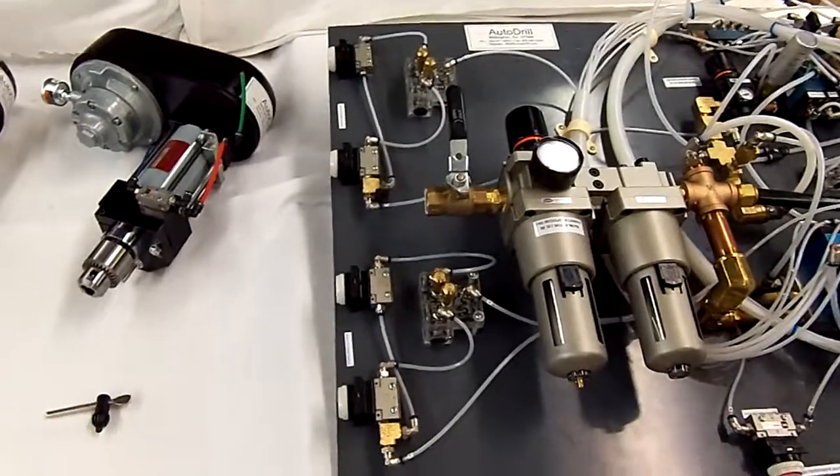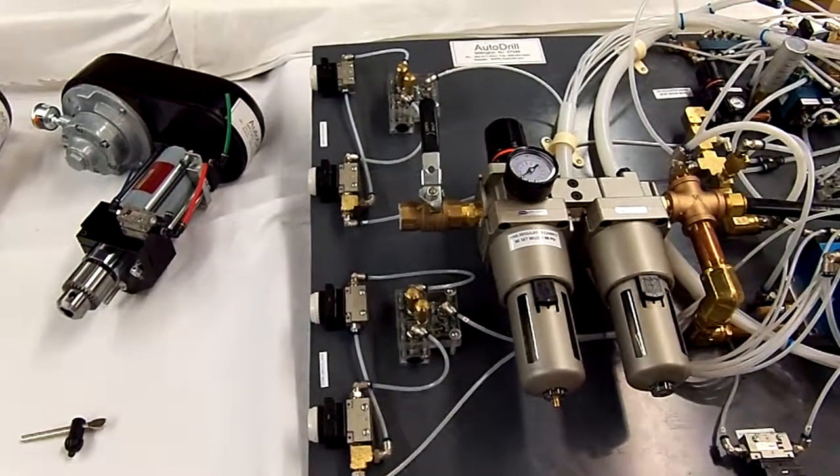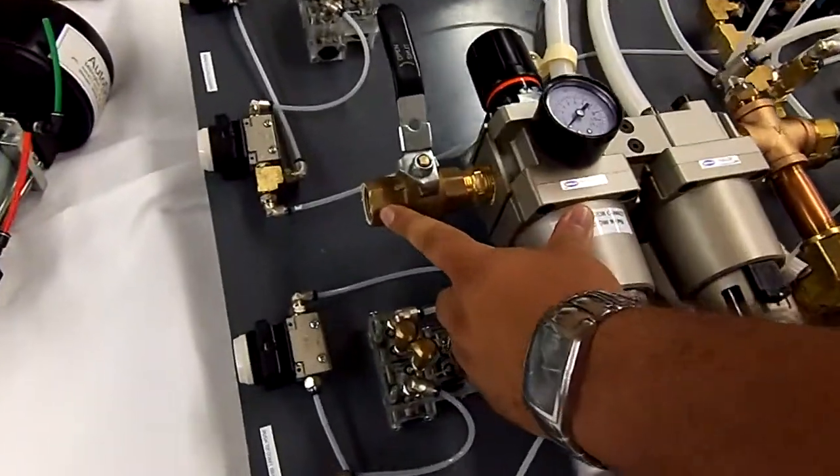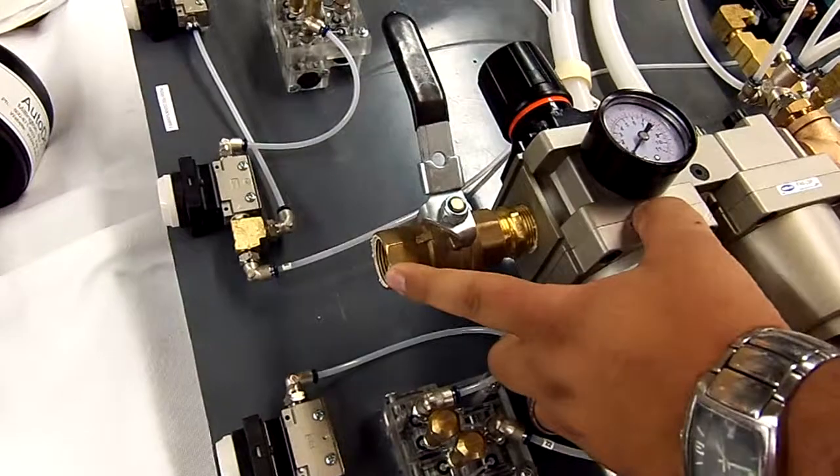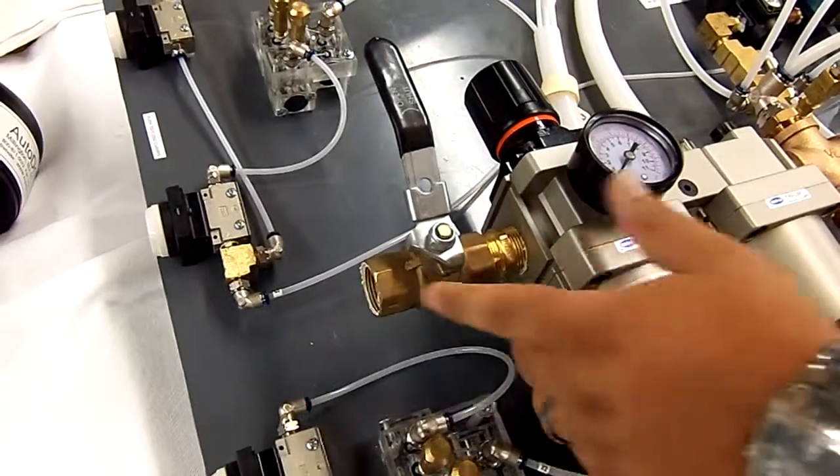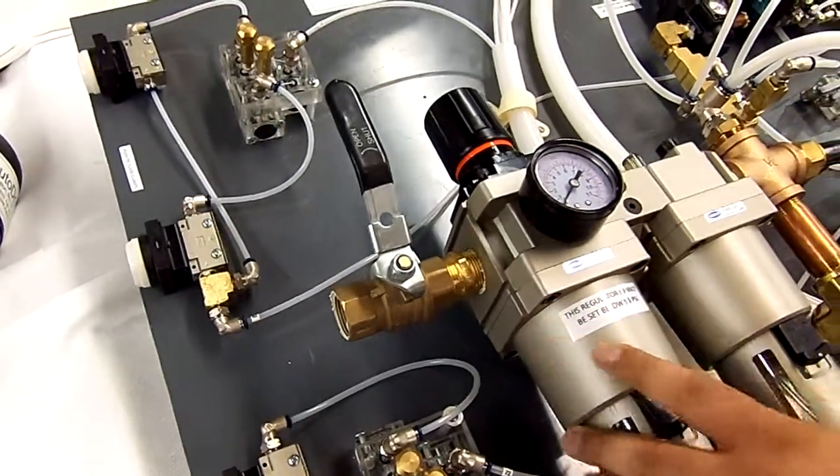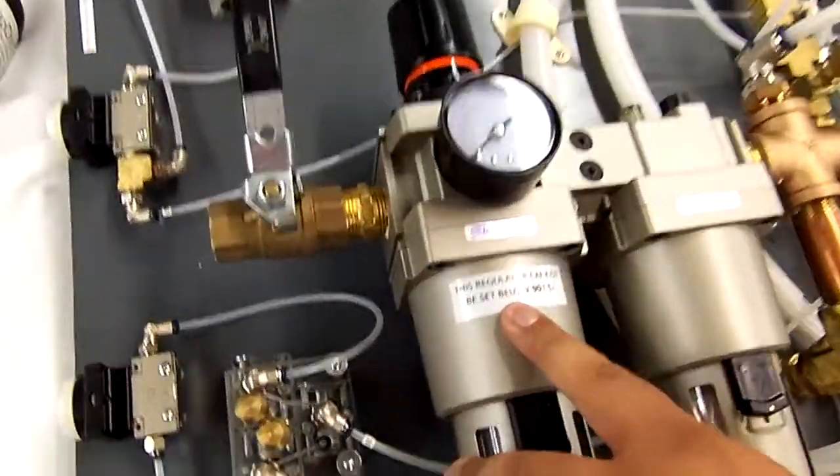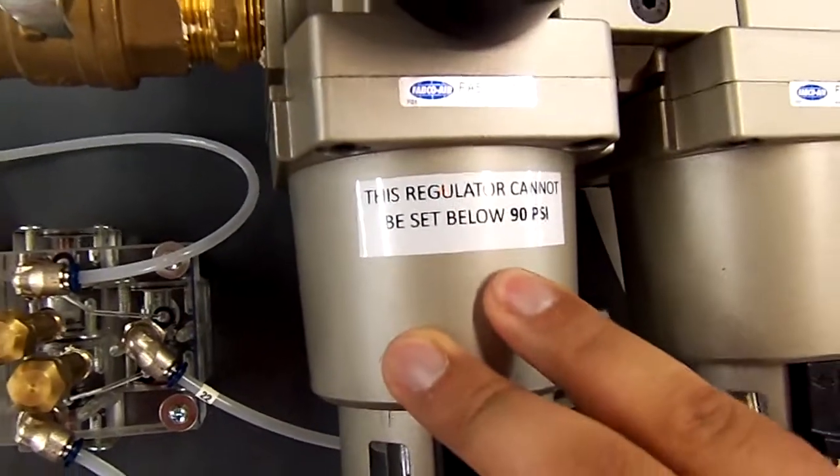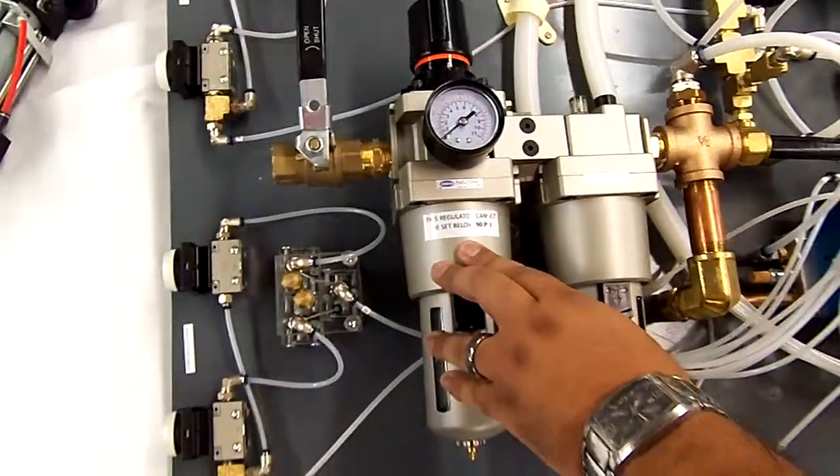This is a standard FRL with a dual manifold for controlling the operation of this drill. The input should be a 3-quarter inch or 1-inch tube. This is a 3-quarter MPT that runs into the main FRL. This label indicates that this FRL regulator cannot be set below 90 PSI.